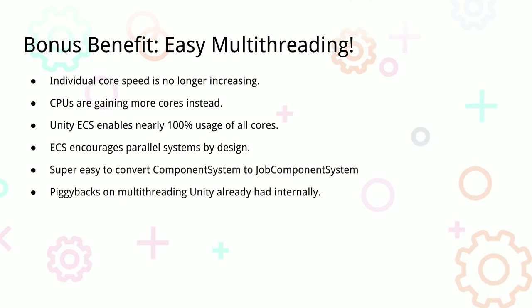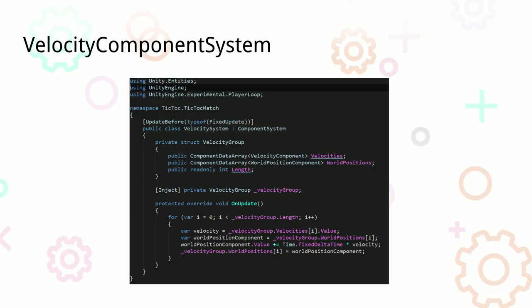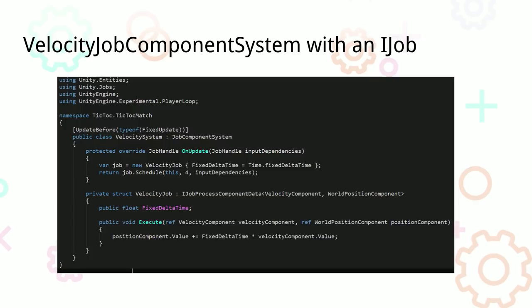Here's an example of a simple system we use — a velocity system. We take everything with a world position and a velocity component and add the velocity to the position. We don't care what these things are — we can use this in multiple games, not even just puzzle games. Converting it to a job is literally the same class: just change the code and it works with the rest of the game fine, with no other changes. Now this entire system runs on a second thread.